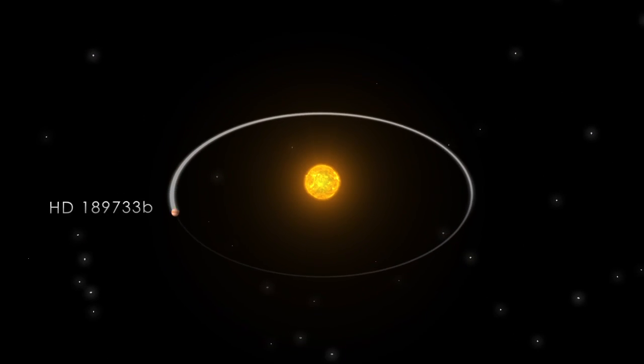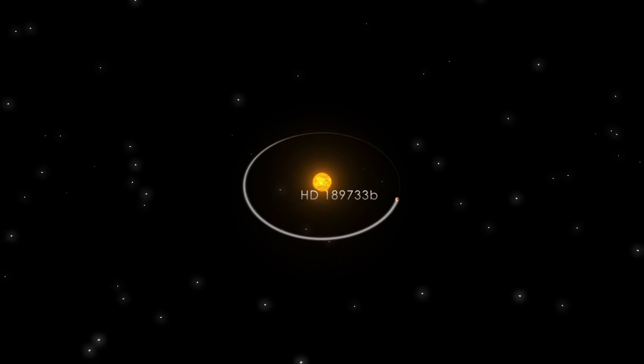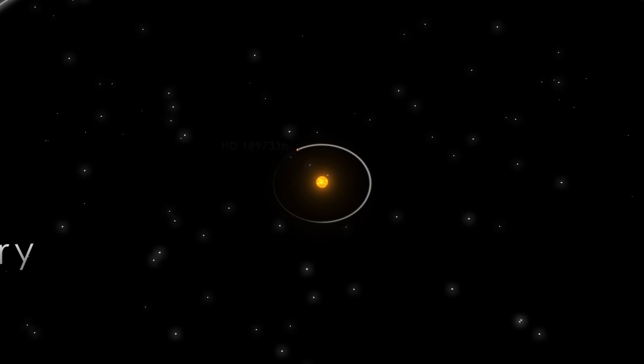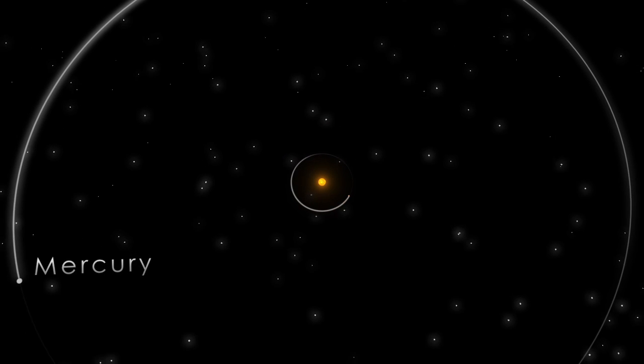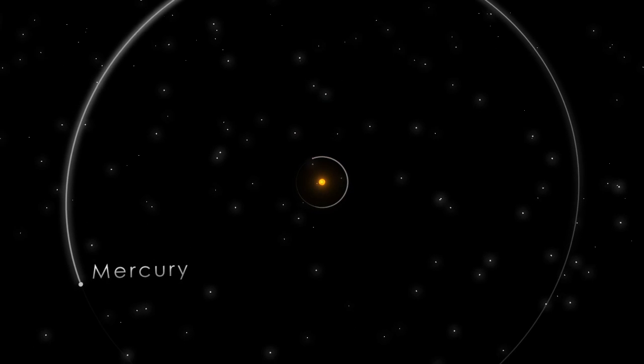Incredibly, the planet orbits just 3 million miles from the star, 12 times closer than Mercury orbits our Sun. It's so close that the planet whips around its star in a little over two days.